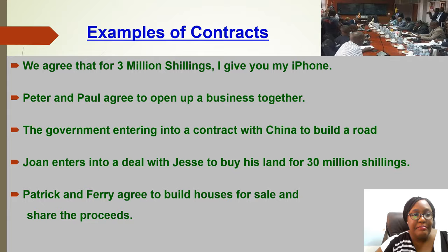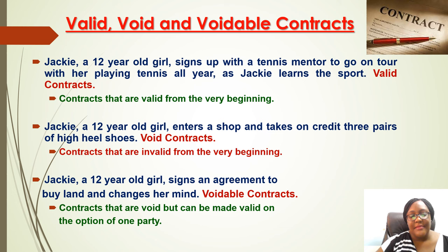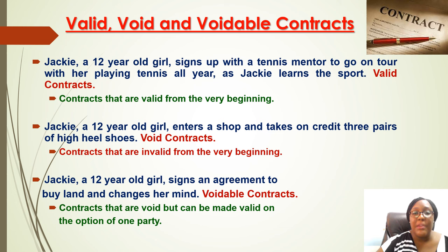I now want to distinguish between a valid contract, a void contract, and a voidable contract — three terms that confuse students a lot. A valid contract is one that is existing, legal, and valid from the very beginning. For example, Jackie is 12 years old — a minor — and she signs up to be mentored by someone. That is a valid contract because the contract is to help improve the minor's skills. Any contract with no illegalities or issues is a valid contract.